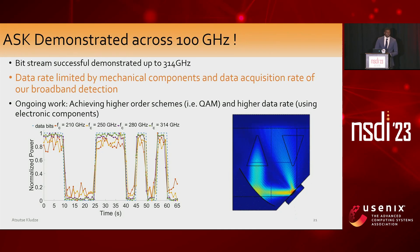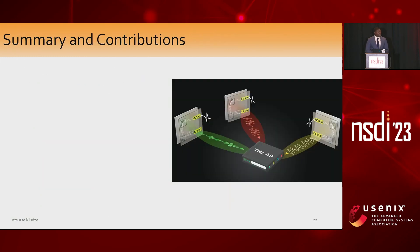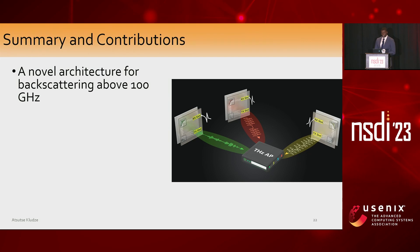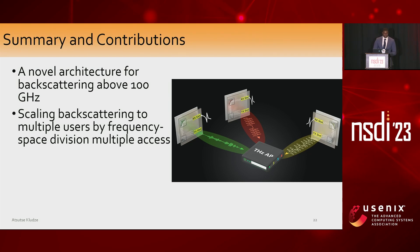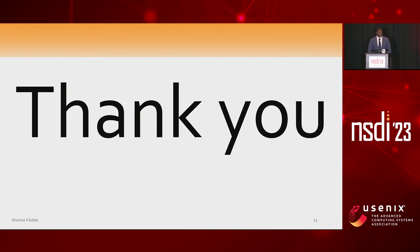We're doing ongoing work to optimize this for higher-order modulation schemes while increasing the data rate by using more electrical components. In summary, our contributions are as follows: we created a novel architecture that enables backscattering above 100 GHz; we're able to potentially scale this to multiple users in frequency space with multiple access; and this is the first work to demonstrate ASK at these frequencies. Thank you — I'll take any questions.